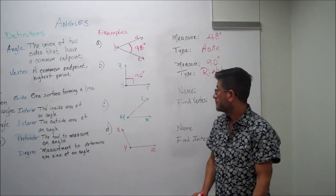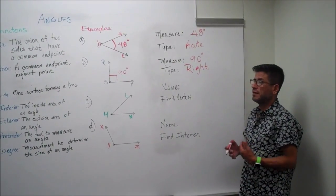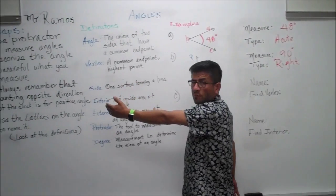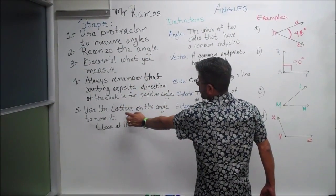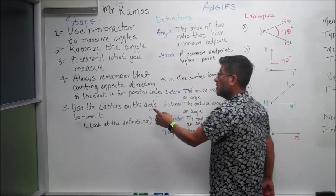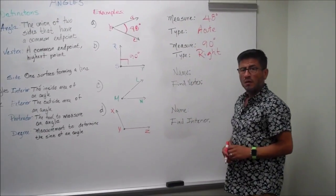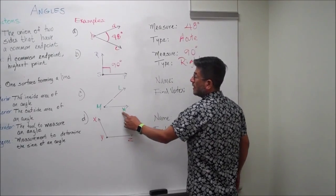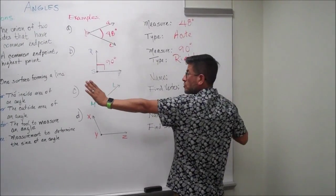Now let's go to the next one. It's asking us to name the angle. If you look at your steps, number five is telling us to use the letters on the angle to name it. Look at your angle right here — we have L, M, N. And that's the way you read it, from left to right: L, M, N.